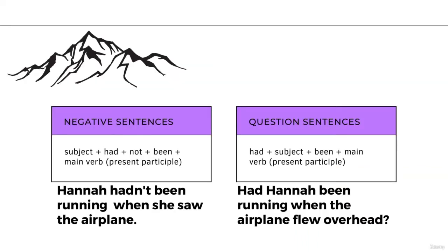For negative sentences and question sentences, the structure is a bit different. For negative sentences, we can say: Hannah had not been running when she saw the airplane. Or you could say: Hannah hadn't been running.